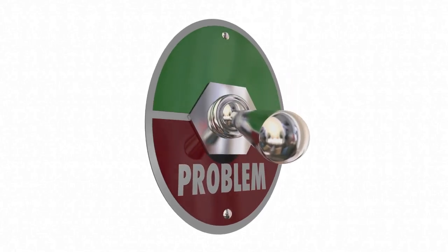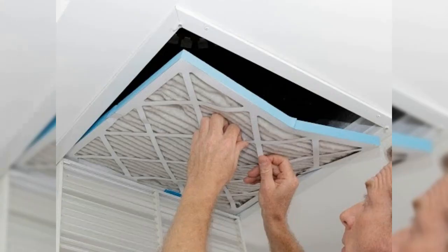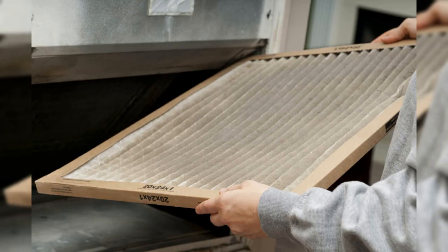How to fix it? The solution to this problem is simple: replace your air filters regularly. It is recommended to replace your air filters every three months or whenever they become noticeably dirty. To replace your air filters, simply locate the air filter compartment, remove the old filter, and replace it with a new one. Make sure to choose a high-quality air filter that is the correct size for your system.